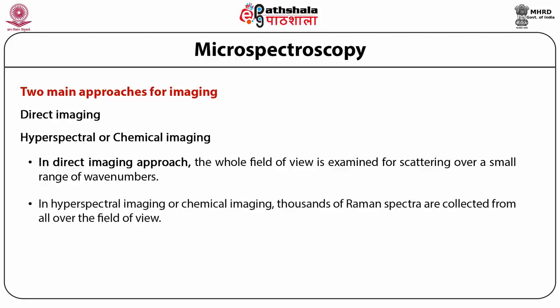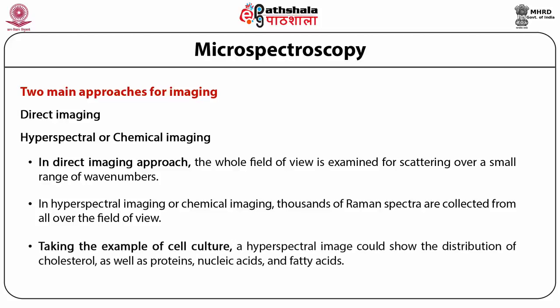In hyperspectral imaging or chemical imaging, thousands of Raman spectra are collected from all over the field of view. This data is then used to generate images showing the location and amount of different components. For example, a hyperspectral image could show the distribution of cholesterol as well as proteins, nucleic acids, and fatty acids. With direct imaging using Raman spectra, one can very accurately and conveniently determine cholesterol distribution within a cell culture.